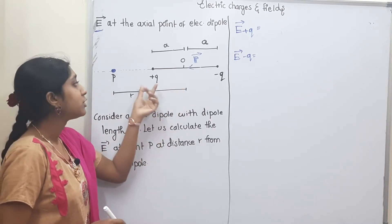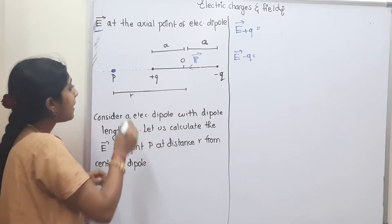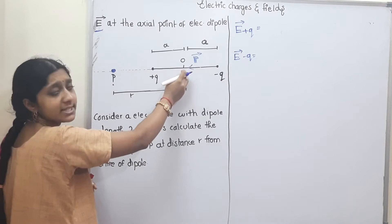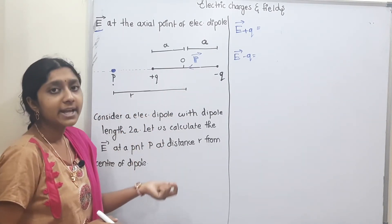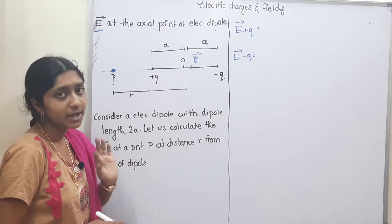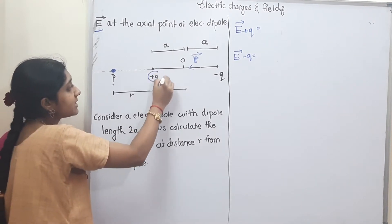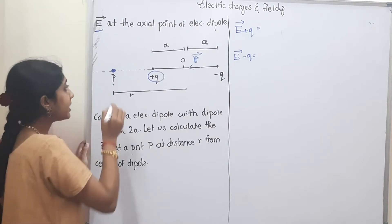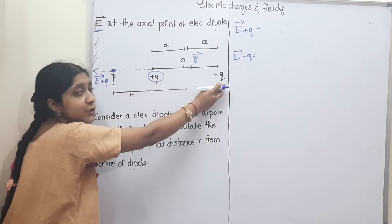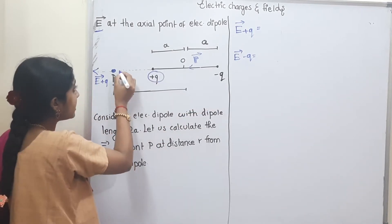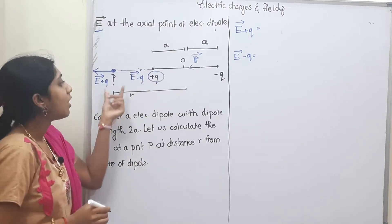The center of the dipole is at distance r from point P. The dipole moment direction is from minus to plus, which we will mark. Next, we mark the electric field directions. The electric field due to the positive charge is outward — that is E plus q vector. For the negative charge, the field is directed towards the charge — that is E minus q vector — so the two are in opposite directions.